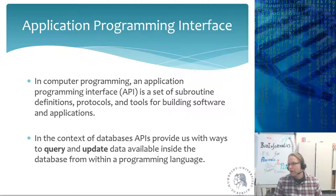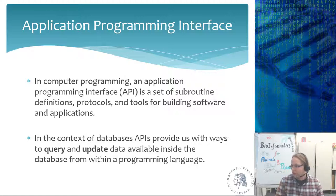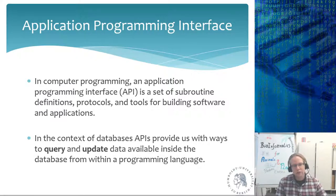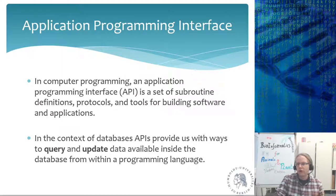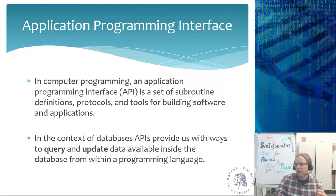Welcome back everyone. We're talking about application programming interfaces because we want to query databases not just query by query, but from within a programming language. An API in computer programming is a set of subroutines that allows you to query or update a database from within a language like R, where you can query hundreds of genes in a loop without going through a web interface. We'll return to APIs when we discuss Biomart to connect to biological databases such as Ensembl.